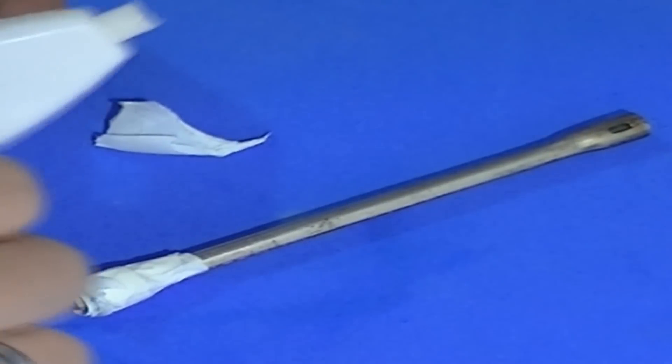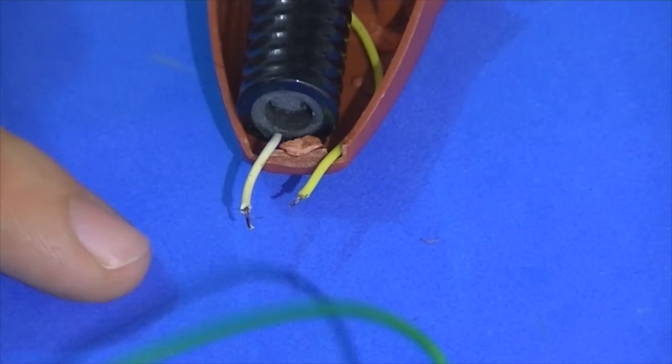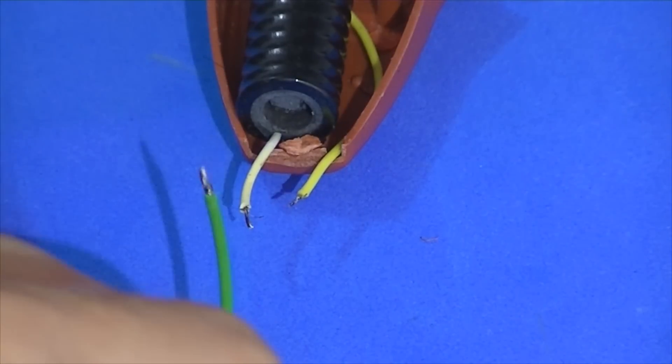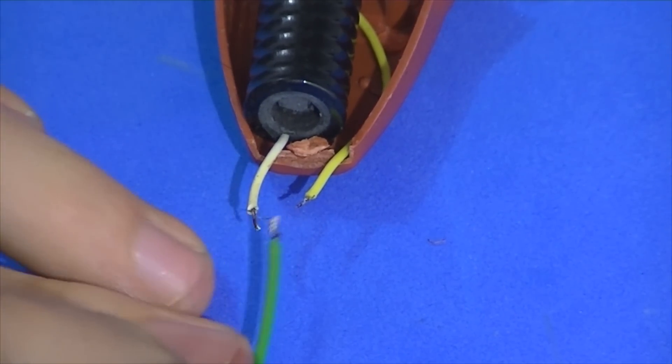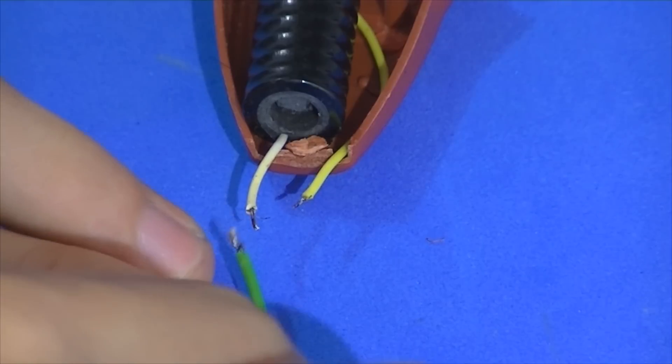Vamos pegar um fio da lâmpada, aqui, é um fio da lâmpada, e vamos soldar em qualquer um do fio do nosso acendedor.